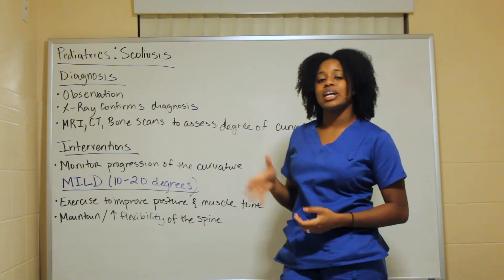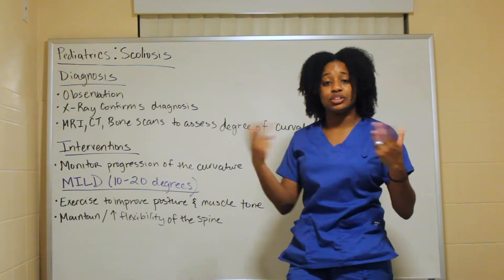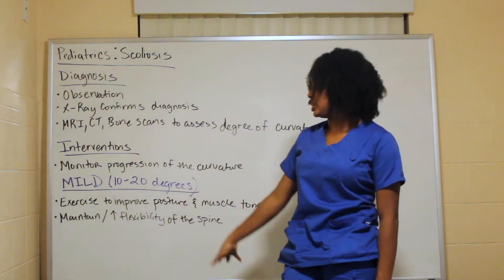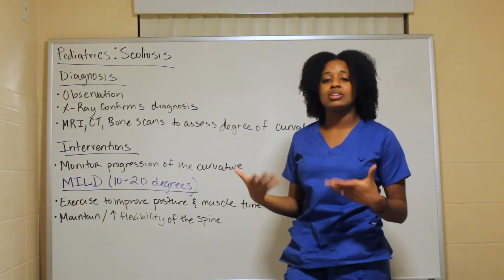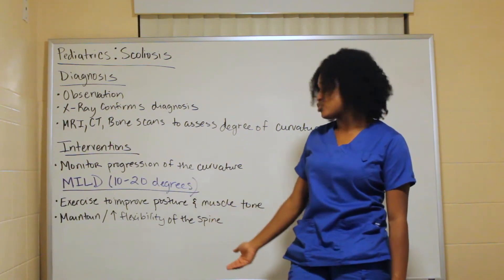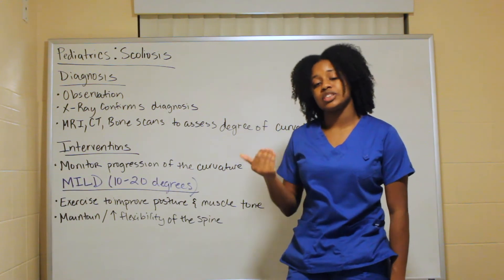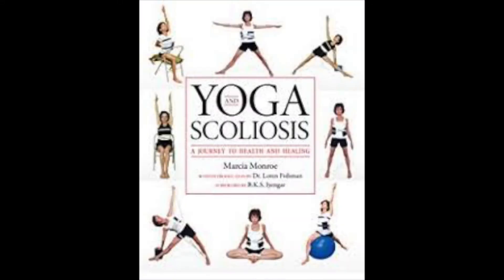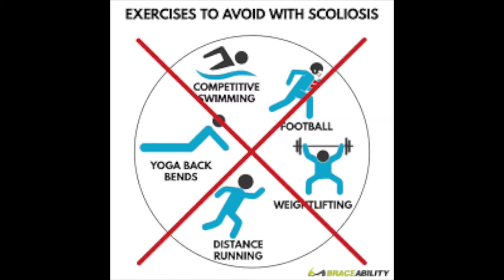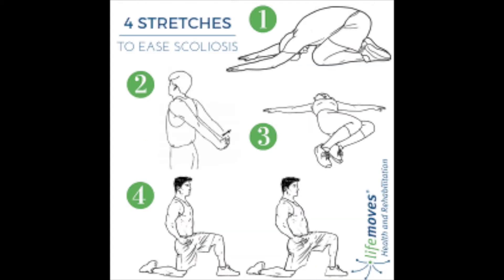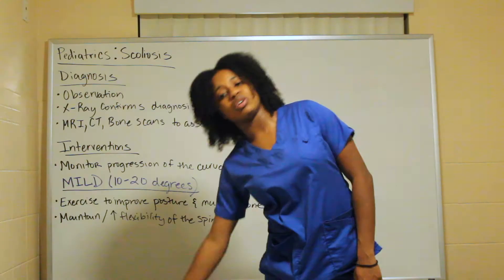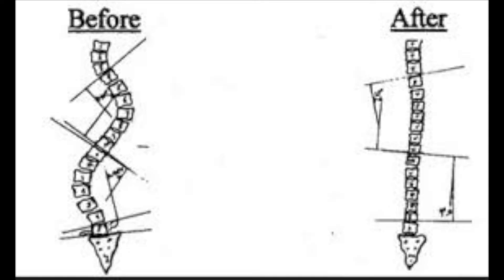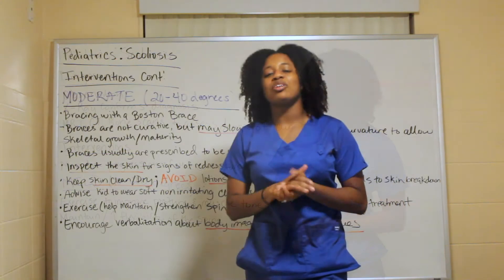With interventions, the main goal is to monitor the progression of the curvature, since the degree determines what intervention is needed. For mild scoliosis — 10 to 20 degrees — exercise is recommended to improve posture and muscle tone, and to maintain and increase spinal flexibility. Exercises include stretching, touching your toes, lunges, back stretches, and side leans.